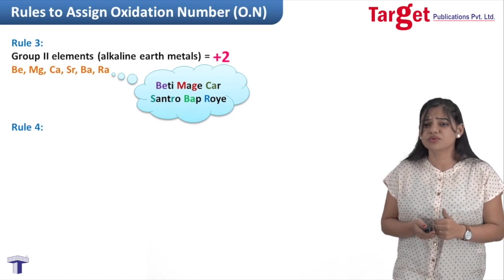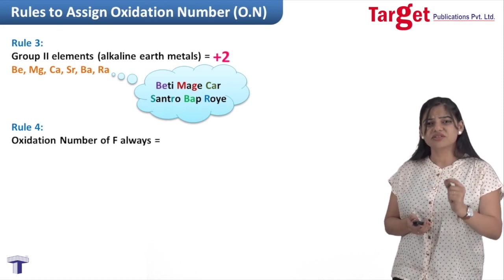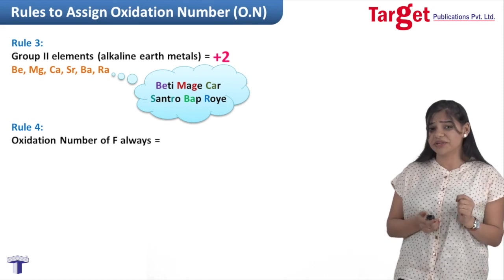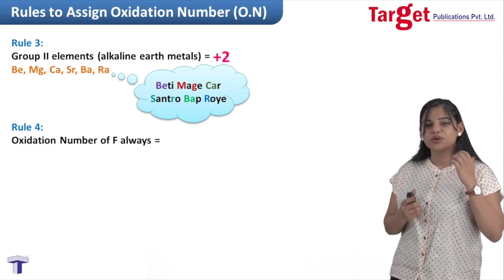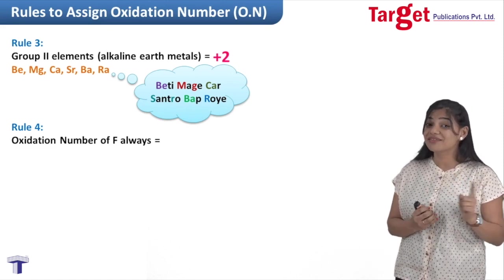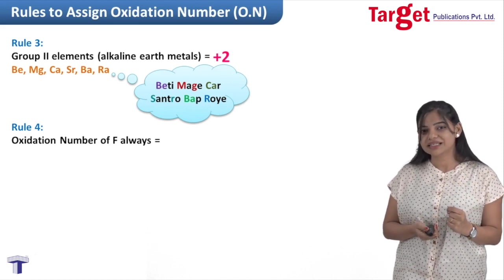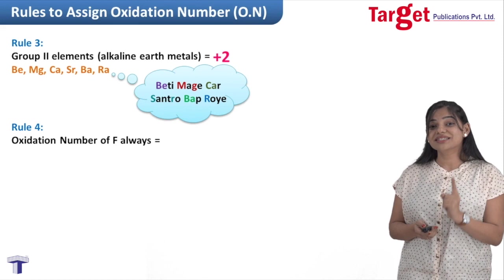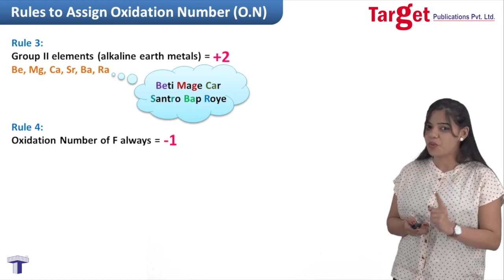Rule 4: oxidation number of fluorine. Fluorine is the highest electronegative element in the periodic table, with an electronegativity of 4. So it will always have the tendency to gain electrons and will never lose them. Each fluorine atom can gain just one electron, so the oxidation state of fluorine is always −1.